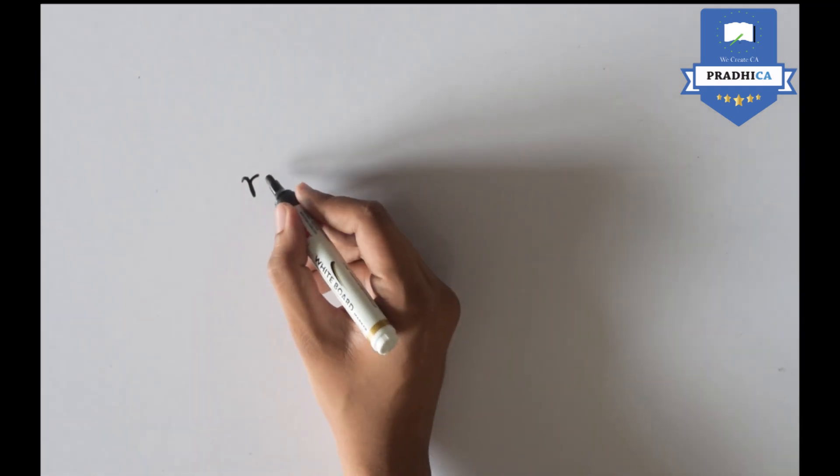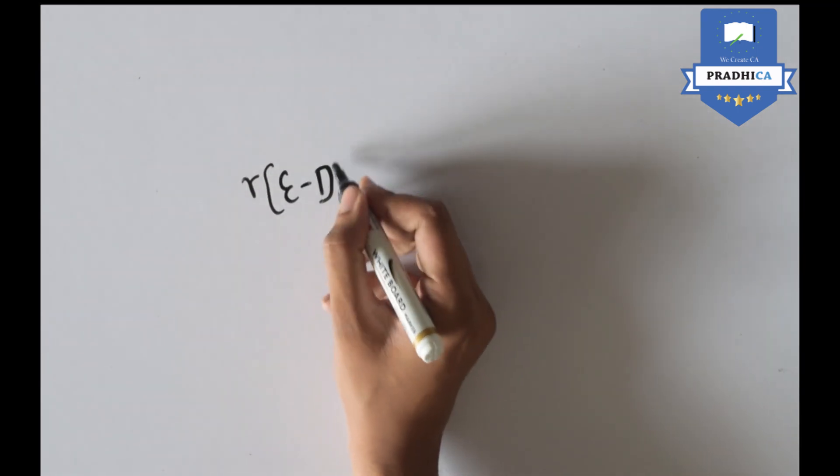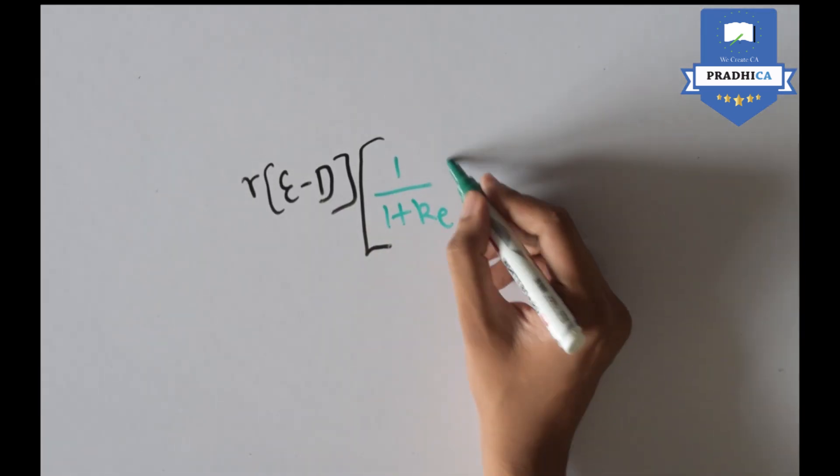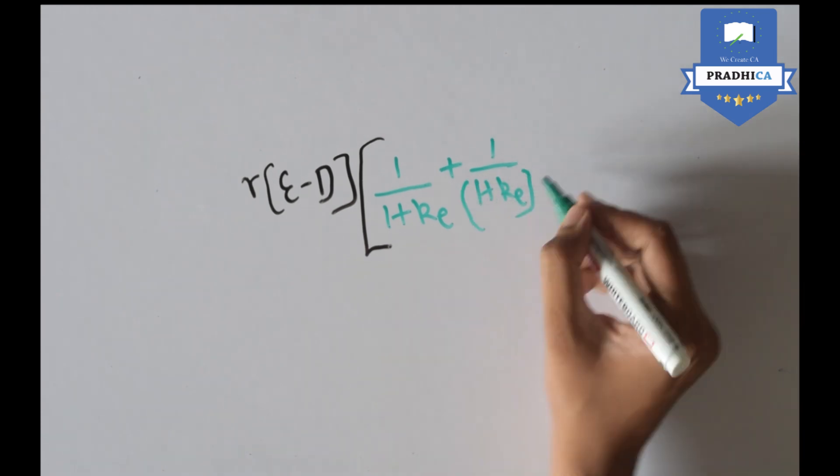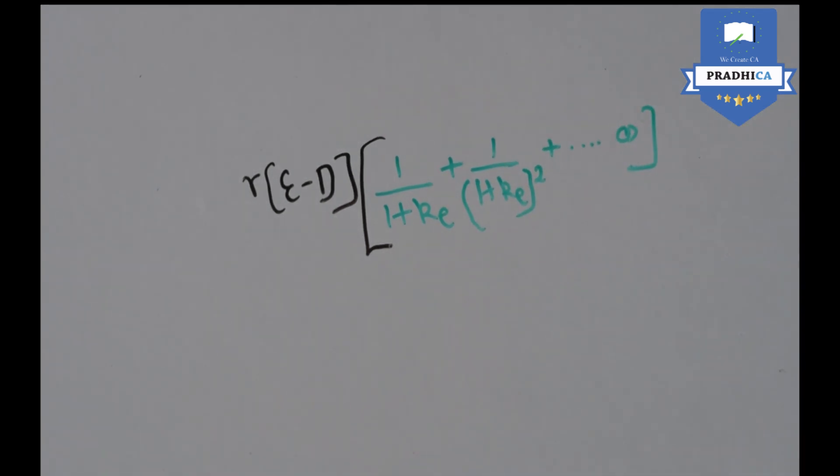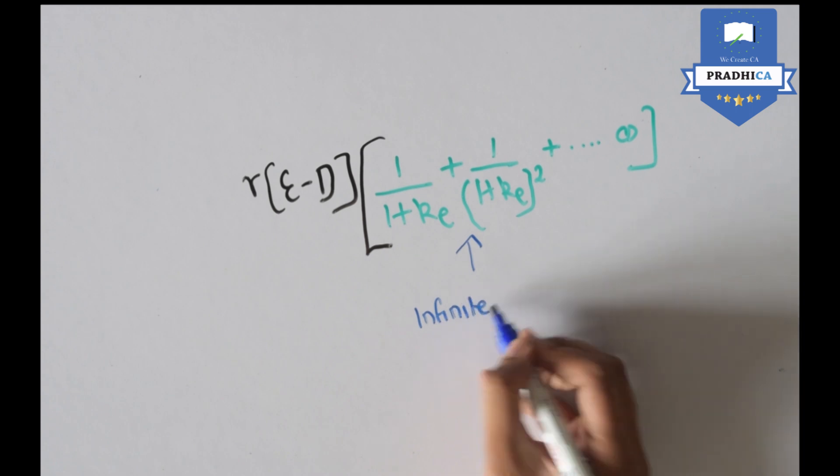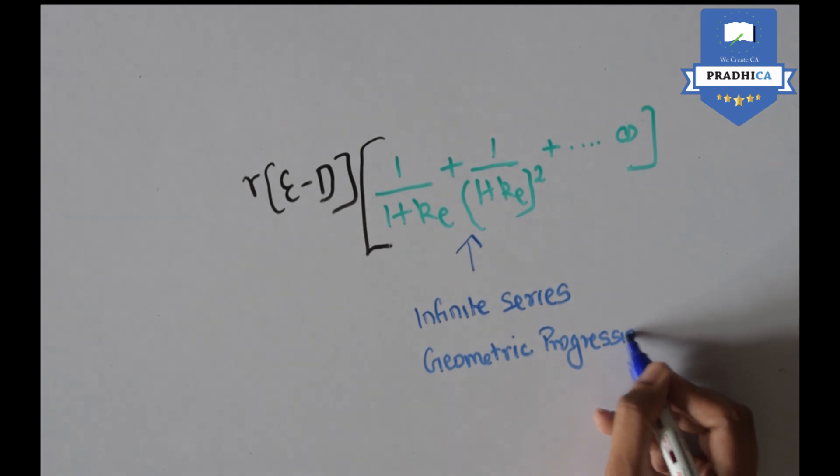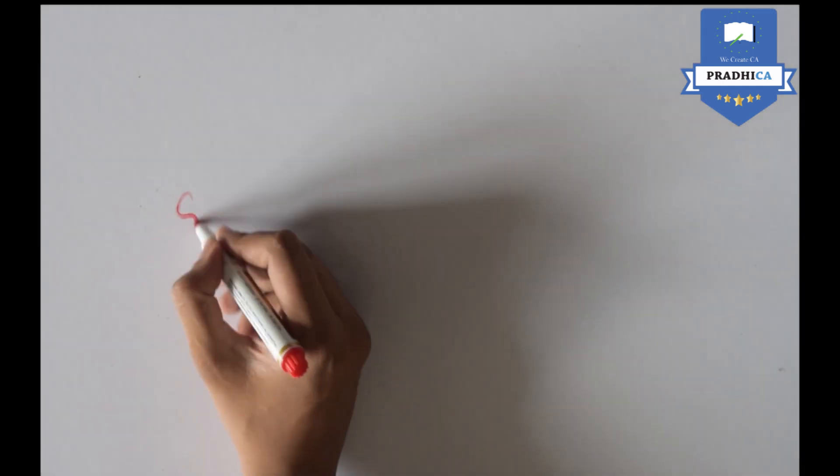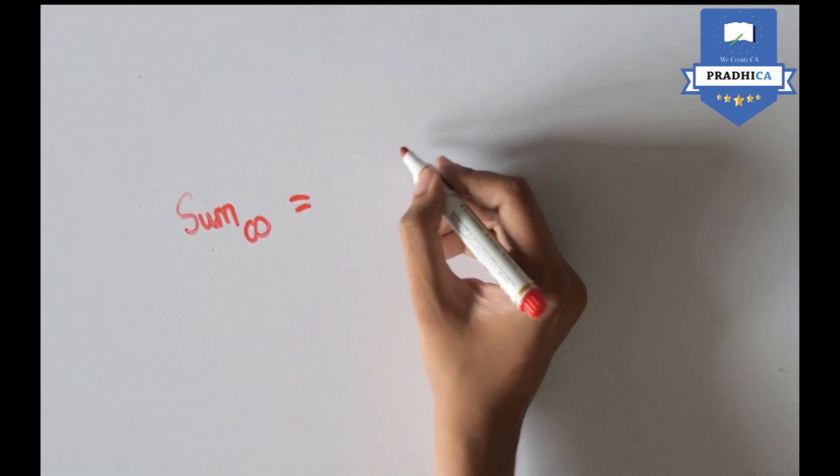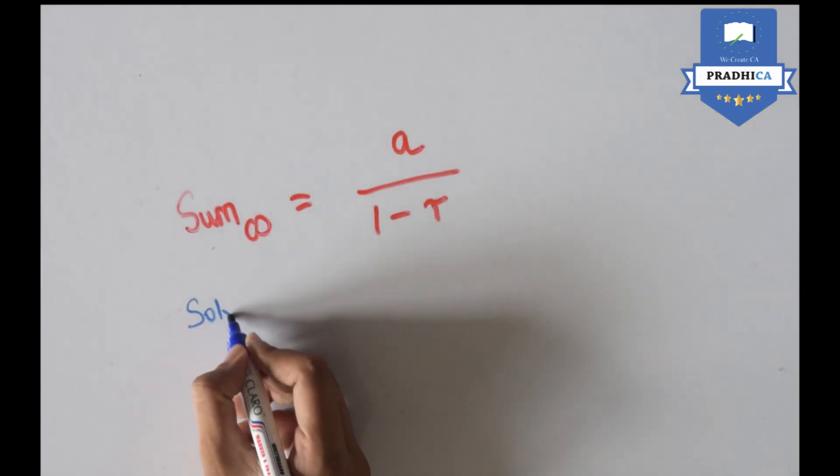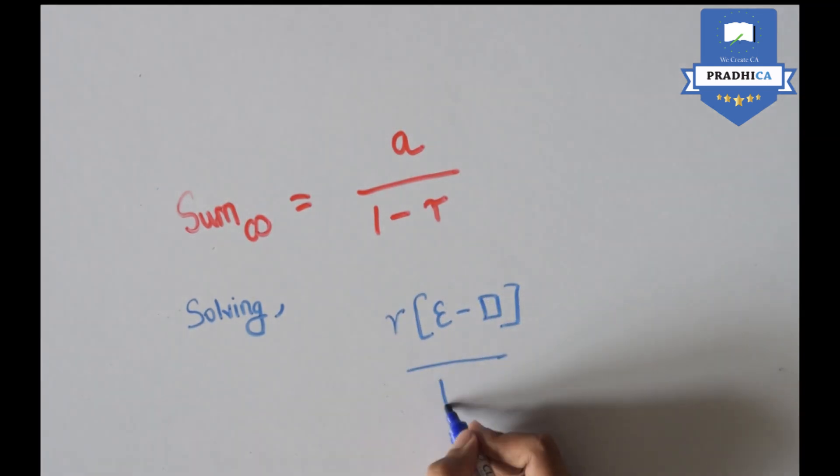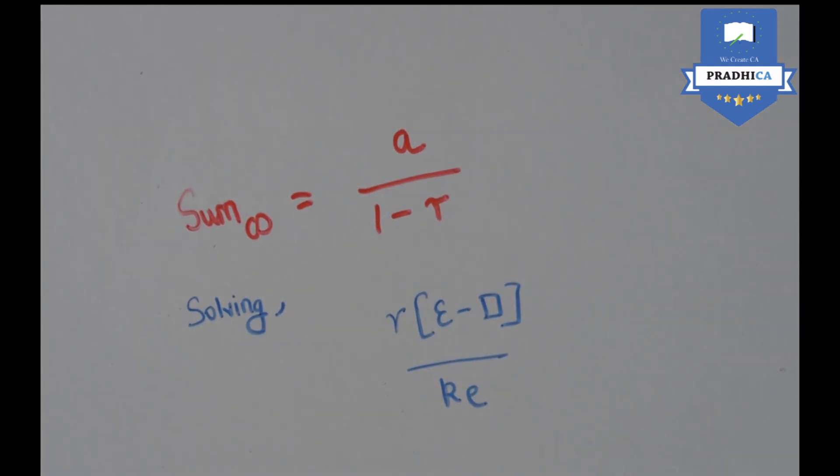When we take R into E minus D common out of this equation, we find that the remaining portion of the equation is representing an infinite series geometric progression. We know that the sum of an infinite series progression is A by 1 minus R. When we solve our equation using this logic, we arrive at R into E minus D by KE, which is our second part of the numerator.